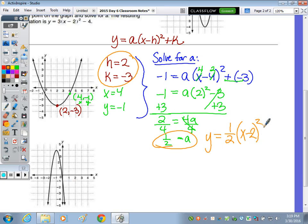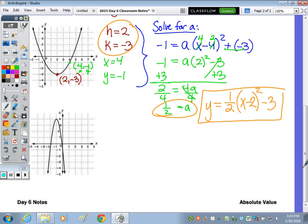So y equals, it's right side up, so 1 half makes sense, a positive 1 half for a. And then it's x minus h, so h is 2. x minus 2 squared, which indicates a shift right, and then down 3 would be minus 3.